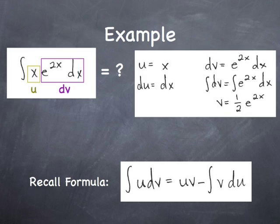After we have identified these values, we take the derivative of the u value. In this case, the derivative of x is just 1, so we have dx equal to du. We have a dv value, and we'll need to integrate that dv value to get just the v value alone.